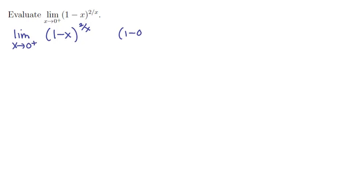Now if we plug in 0, we're going to have (1 minus 0) and the expression above will be 2 divided by 0. In parentheses it's 1, and this is going to be infinity since we're taking 2 divided by a small positive number. Now 1 to the infinity is a type C indeterminate form.